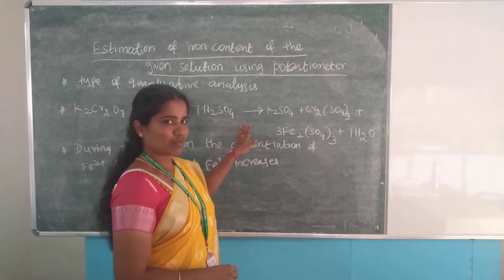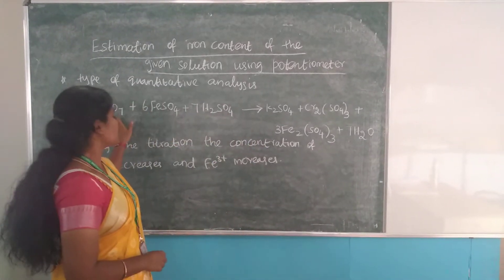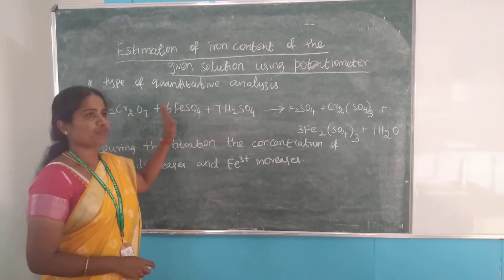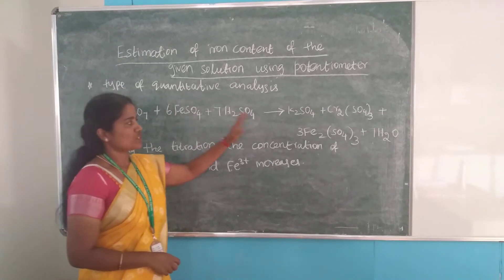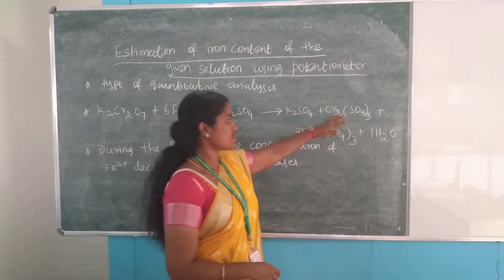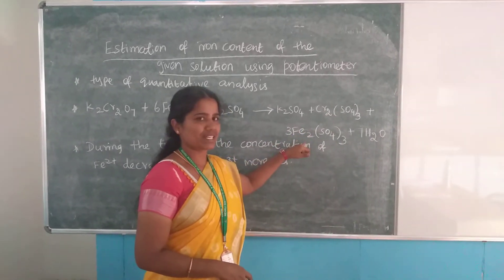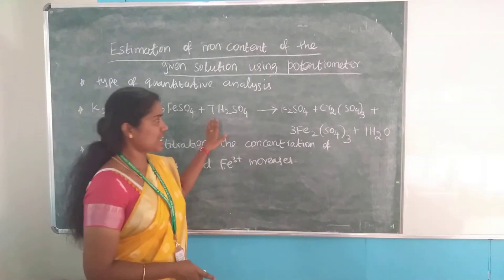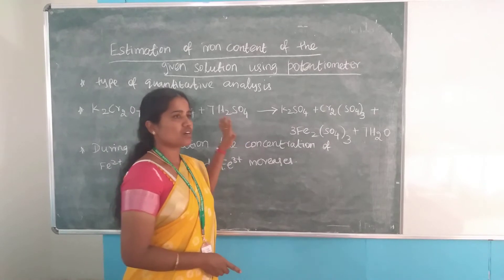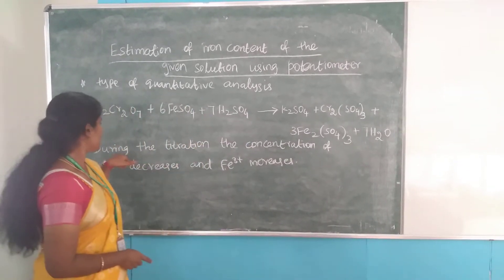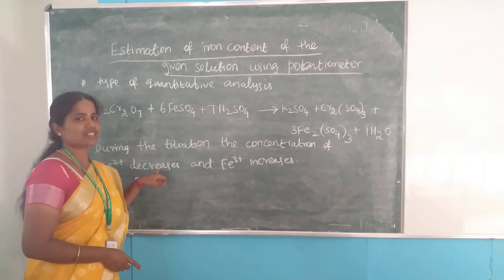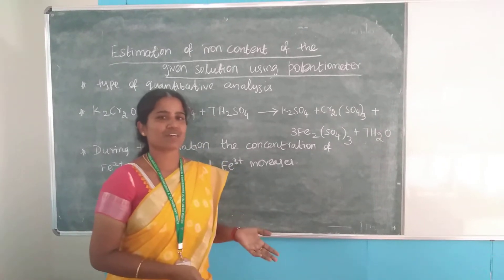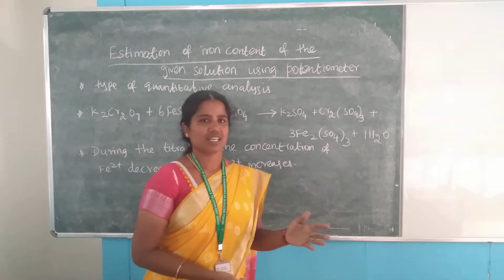The reaction taking place in this experiment: we are using standard potassium dichromate in acidic medium. We are taking sulfuric acid which reacts with ferrous ammonium sulfate, producing potassium sulfate, then chromium sulfate. The Fe²⁺ ion is oxidized to Fe³⁺ and water is produced. This is a redox reaction, and the end point is when Fe²⁺ is fully converted into Fe³⁺ ions.